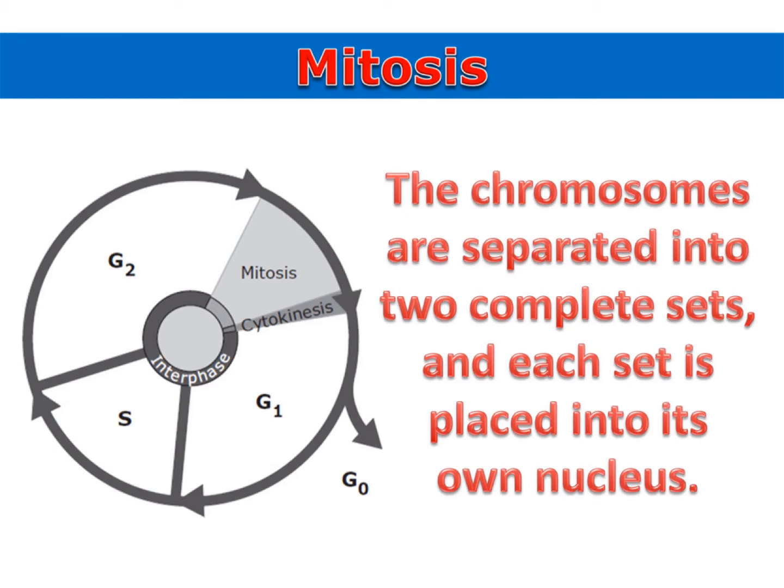The cell replicated its DNA during the S phase. During mitosis, the chromosomes are separated into two complete sets, and each set is placed into its own nucleus.